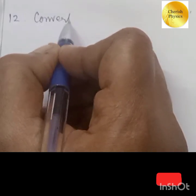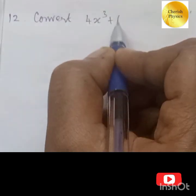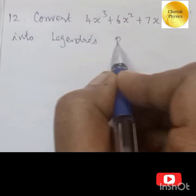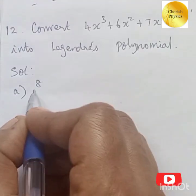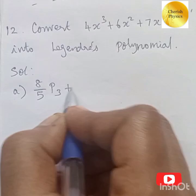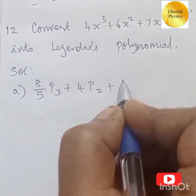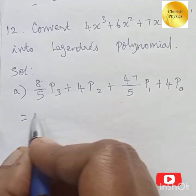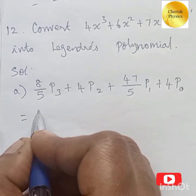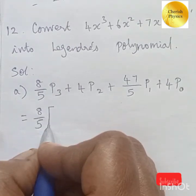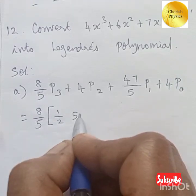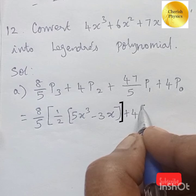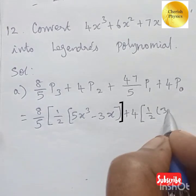12th question: convert 4x³ + 6x² + 7x + 2 into Legendre polynomial. The answer is option A: (8/5)P₃ + 4P₂ + 4P₀. Substituting: (8/5)·(1/2)(5x³ − 3x) + 4·(1/2)(3x² − 1) + 4. This simplifies to 4x³ + 6x² + 7x + 2. Confirmed.